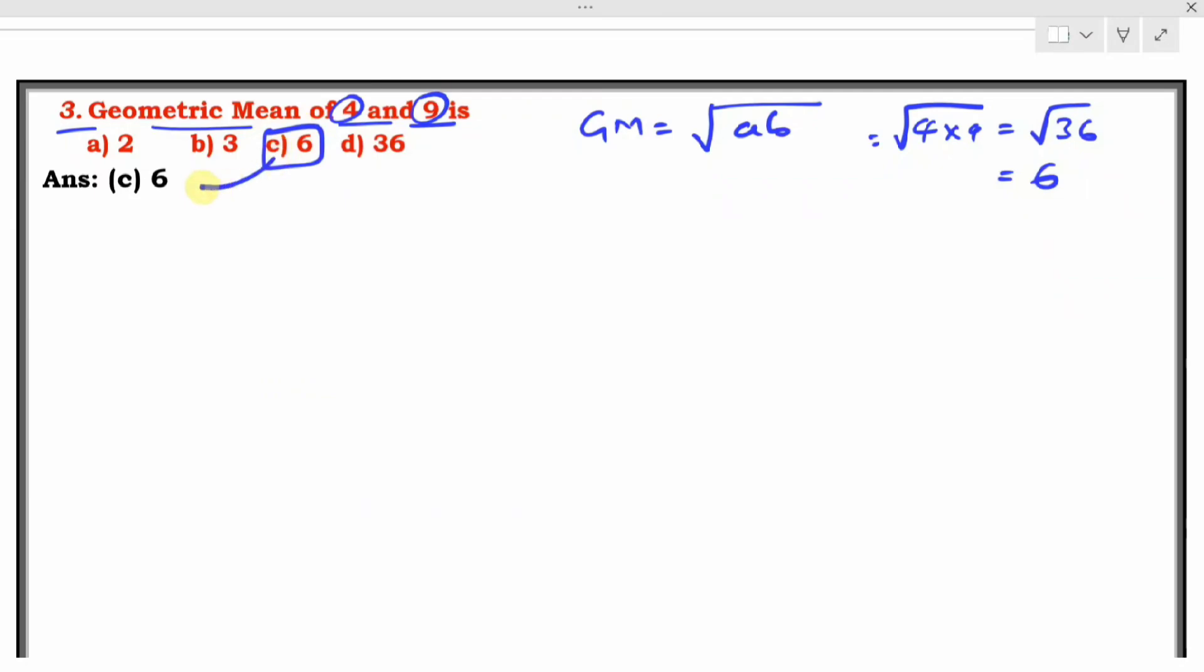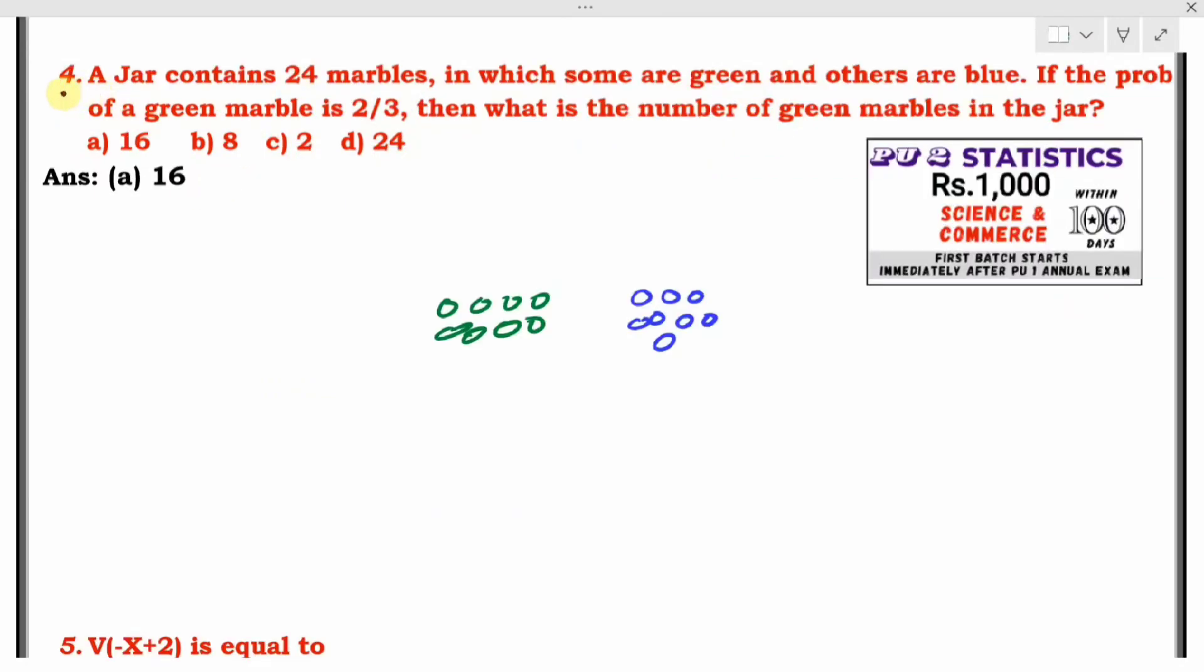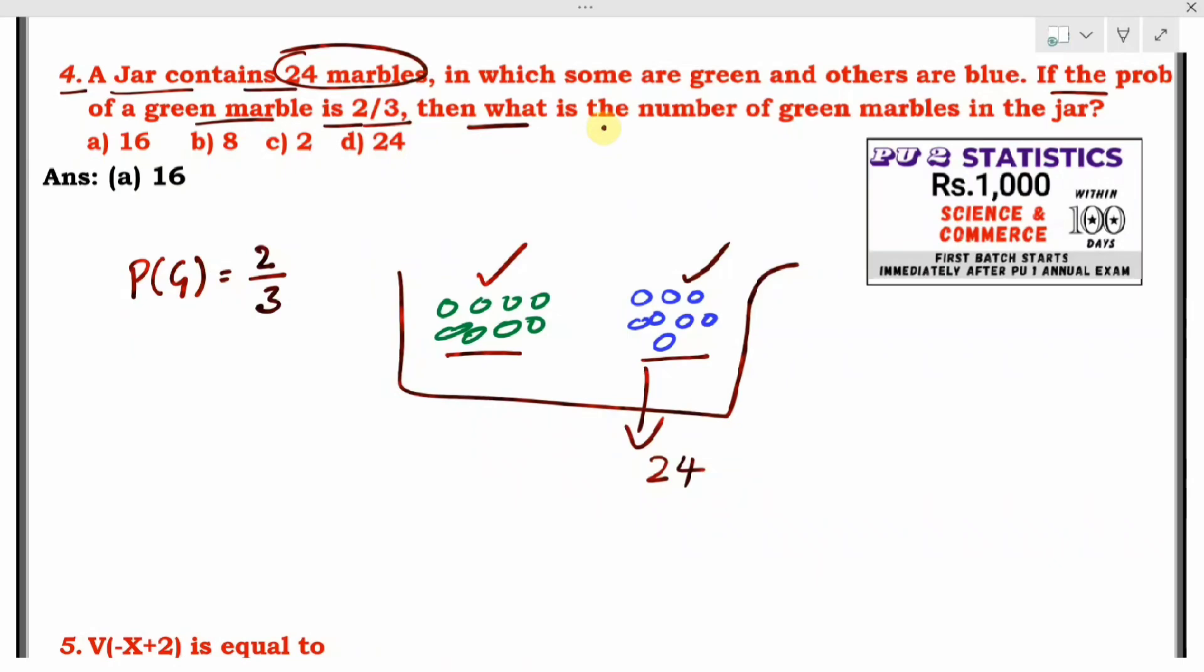Question number four: A jar contains 24 marbles in which some are green and others are blue. They have not given how many green marbles or blue marbles there are. If the probability of a green marble is 2/3, then what is the number of green marbles in the jar? Probability of green equals number of green balls divided by total number of balls.